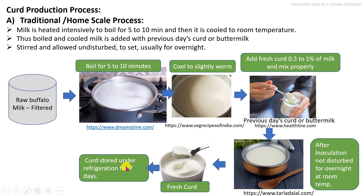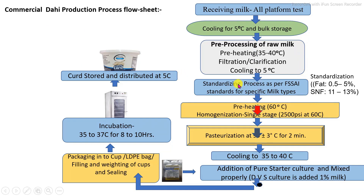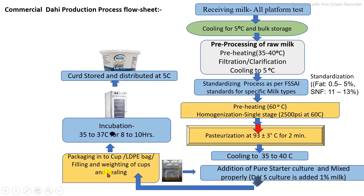The finished curd is stored under refrigeration or frozen conditions as per requirement. For commercial scale production: first, receiving of milk, then pre-processing steps, standardization as per requirement — for example toned milk, full cream milk, or standardized milk — then homogenization with a single stage, then pasteurization. After pasteurization, milk is cooled slightly to warm temperature of 35 to 40 degrees Celsius for culture addition at 0.5 to 1%. Culture is added as pure culture in liquid form or dry powder form. After culture addition, milk is directly packed into packaging material within half an hour in batch-wise addition.